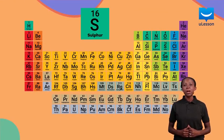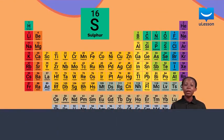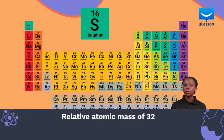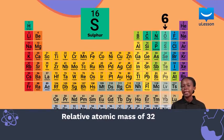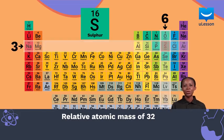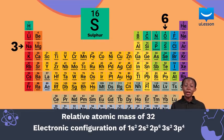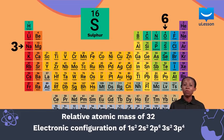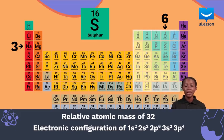Sulfur has an atomic number of 16 and a relative atomic mass of 32. It is located in group 6 or 16 and period 3 of the periodic table as shown here. Sulfur has the electronic configuration of 1s2, 2s2, 2p6, 3s2, 3p4, and it is found in the p block of the periodic table.